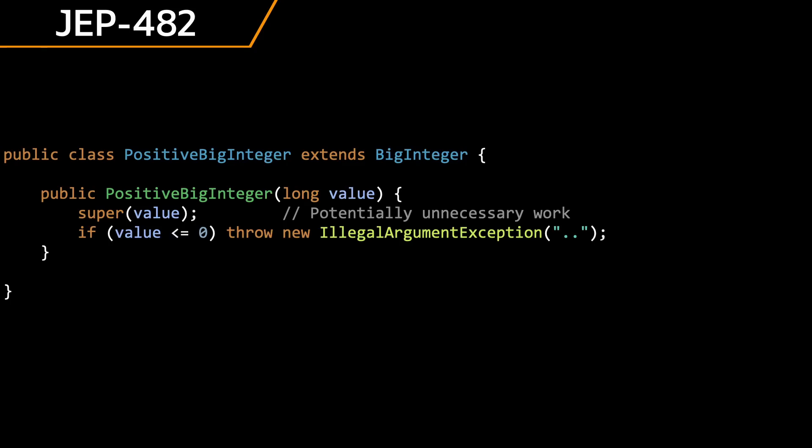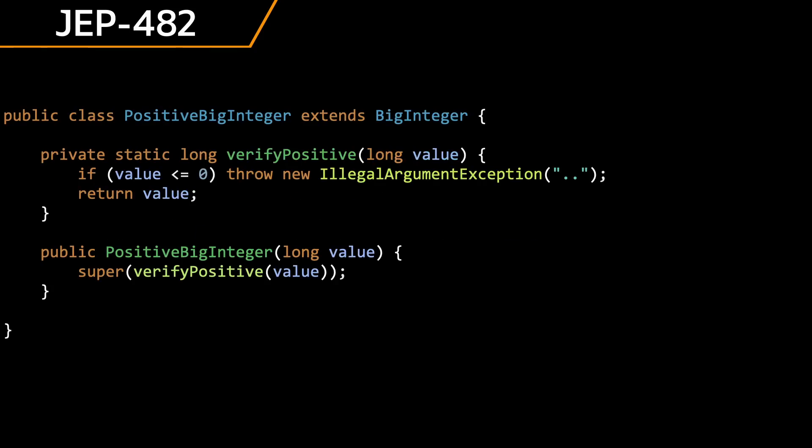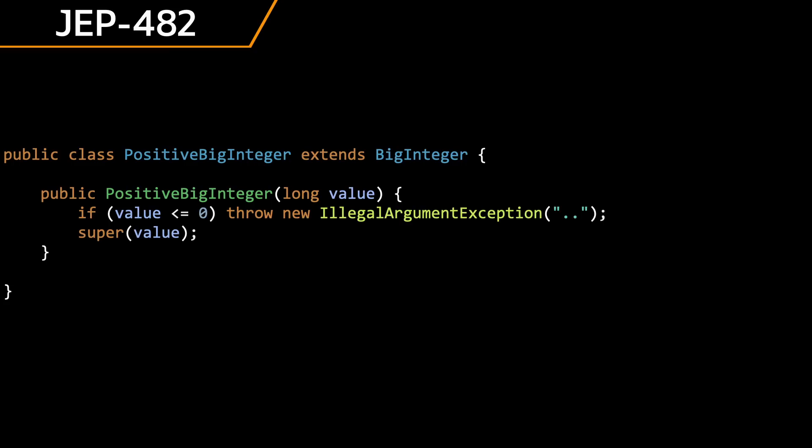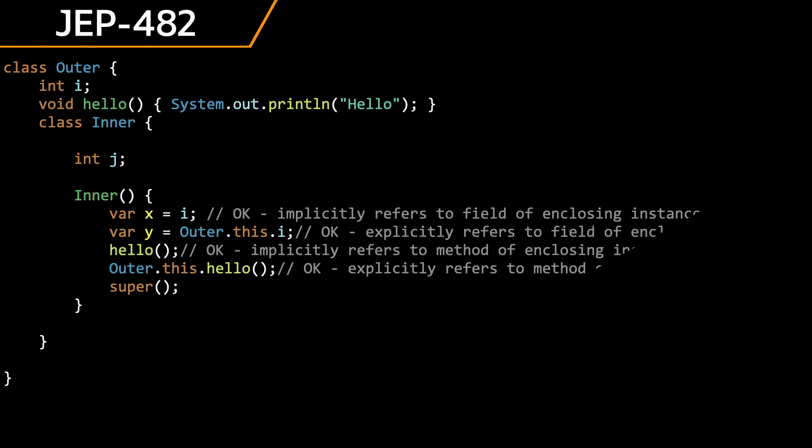Flexible constructor bodies enters second preview in JDK 23 with JEP 482. The purpose of this JEP is to loosen the restrictions when writing a constructor. The change in this revision allows fields defined within the subclass to be initialized before the explicit call to super.